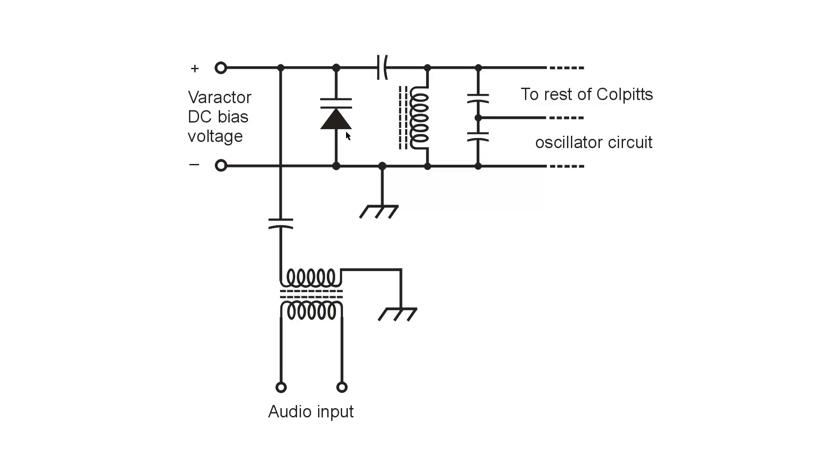In this case, a variable capacitive reactance. And the capacitive reactance of this component depends upon the amount of reverse bias applied to the diode. It's a very special type of diode.